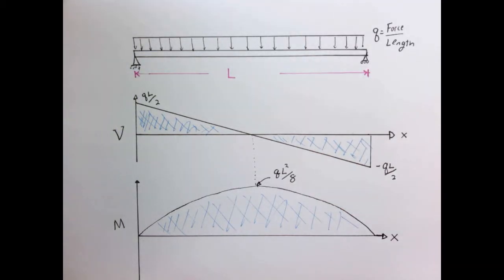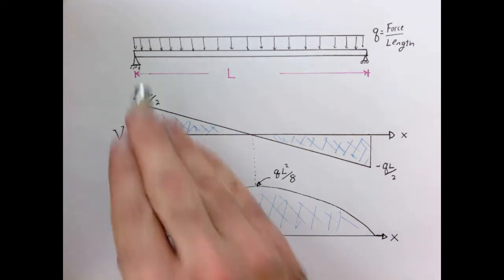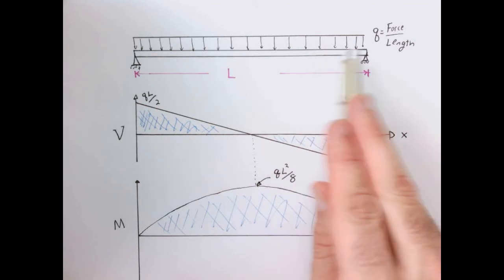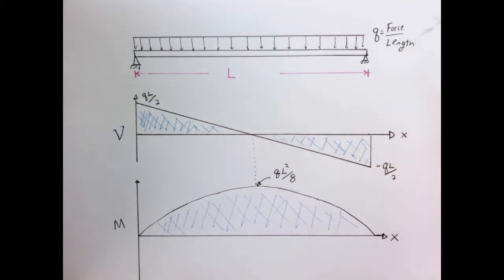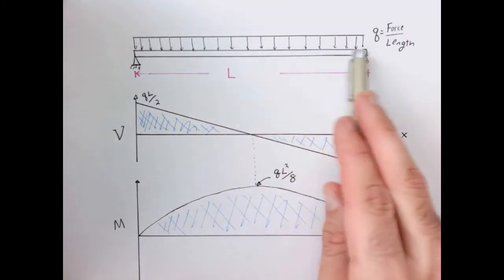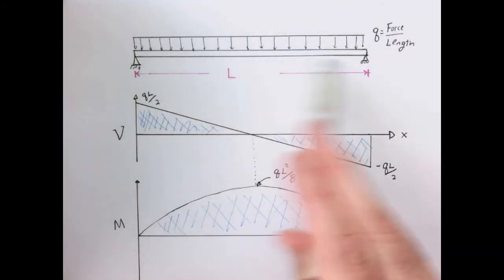In this video we're going to generalize some of the results from the shear and bending moment diagram that we talked about in a previous lecture. Let's start with an example we've already worked: a beam of length L subjected essentially to its own weight. Q is a force per unit length distributed evenly across the beam, which is supported at both ends.